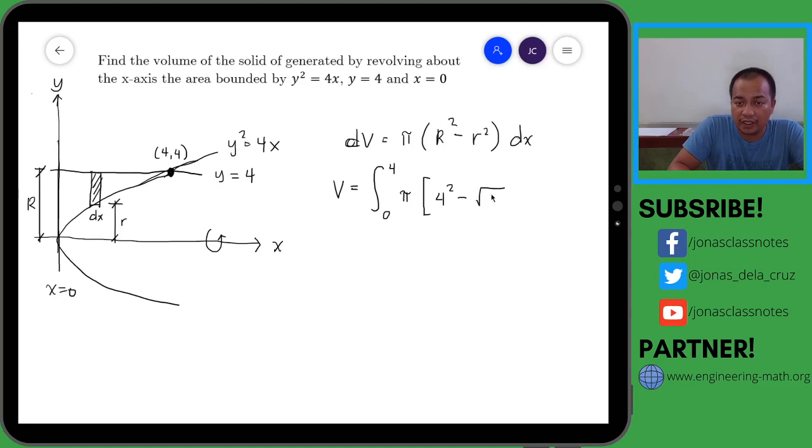Okay, so let us simplify. So the volume is the integral from 0 to 4. We can now evaluate, pi is constant, so this becomes 16 minus 4x, and then dx.